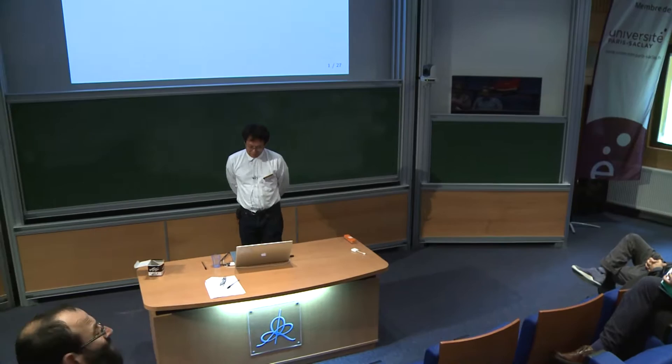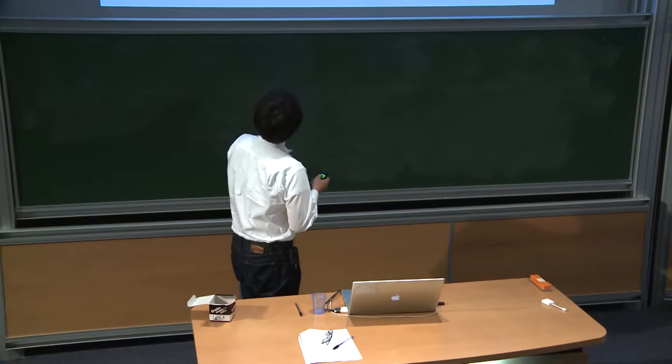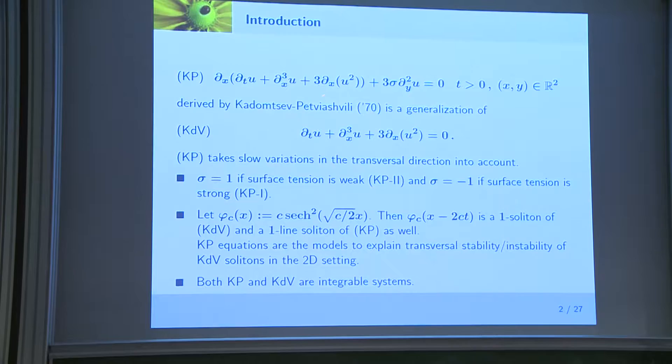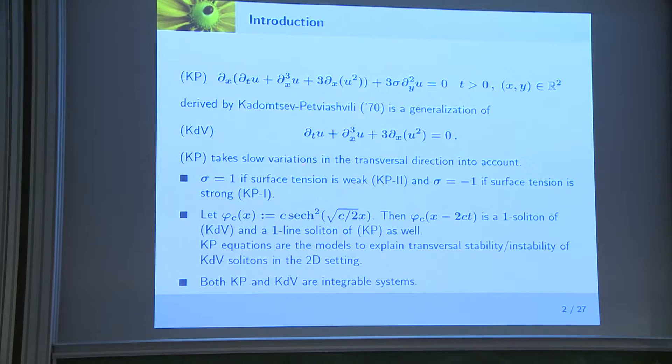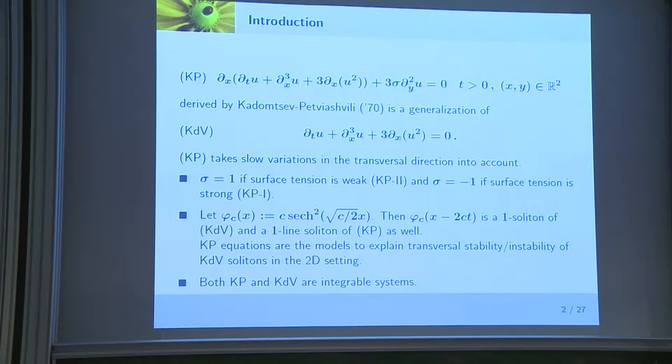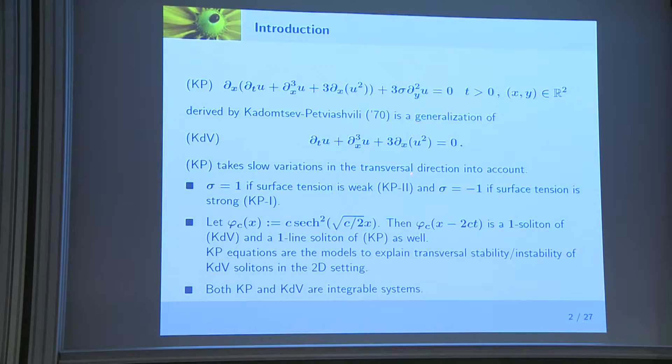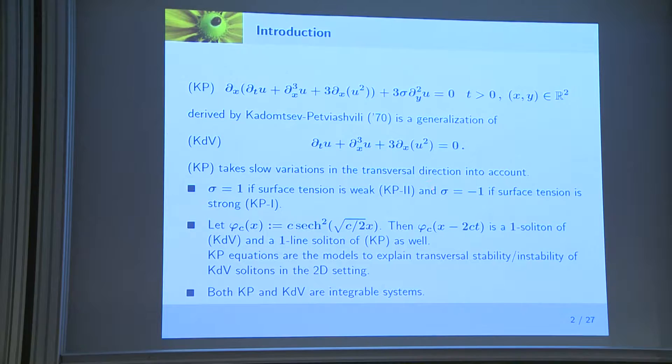I'd like to thank the organizers for inviting me to this conference. Today I'm going to talk about the KP2 equation, which is very close to the KDV equation. Here we have the x-derivative of the KDV equation and some other terms which account for the slow variation of wave motion in the transversal direction. Sigma is a parameter related to surface tension. If sigma is positive, the surface tension is weak, and we call it KP2 equation, which is what I'll discuss today.